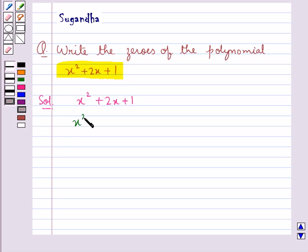Now we have that x squared plus 2x plus 1 is equal to x plus 1 into x plus 1.